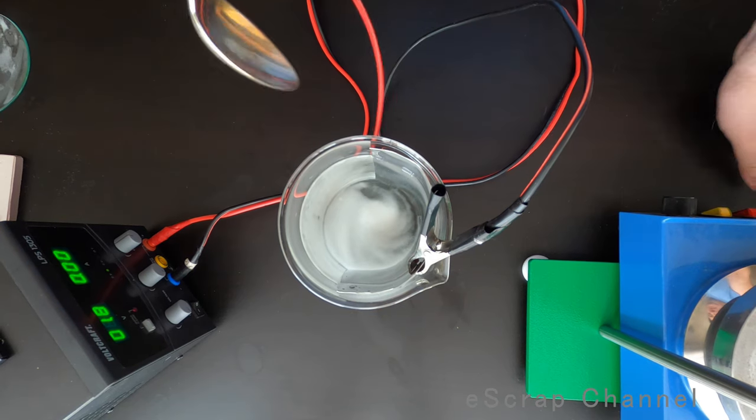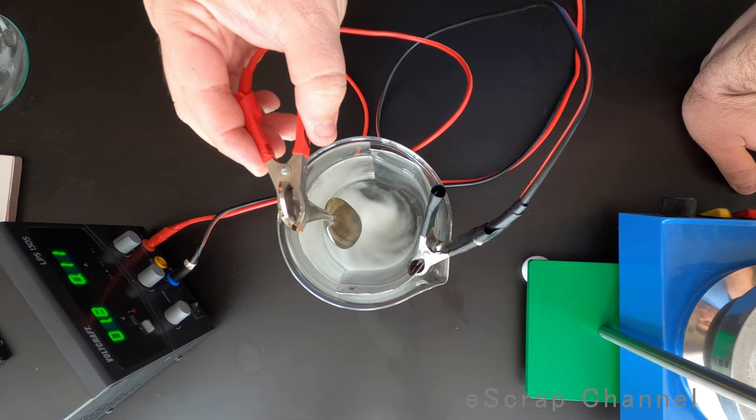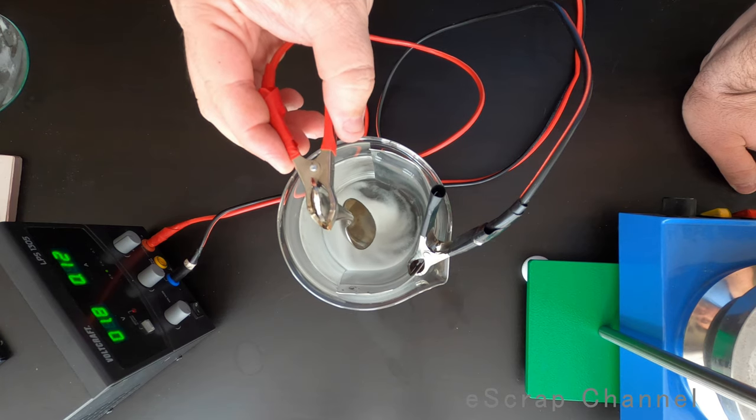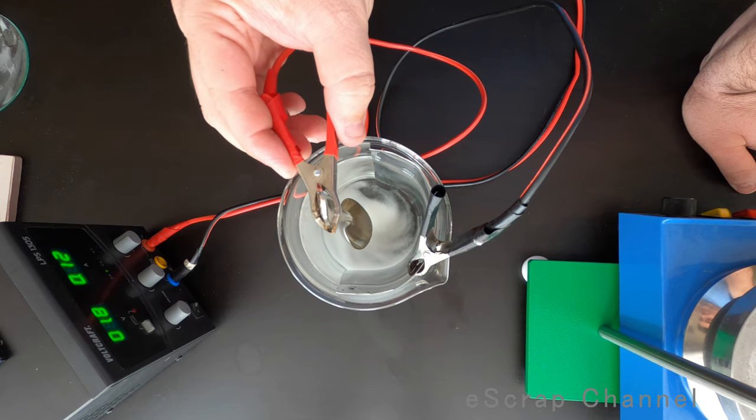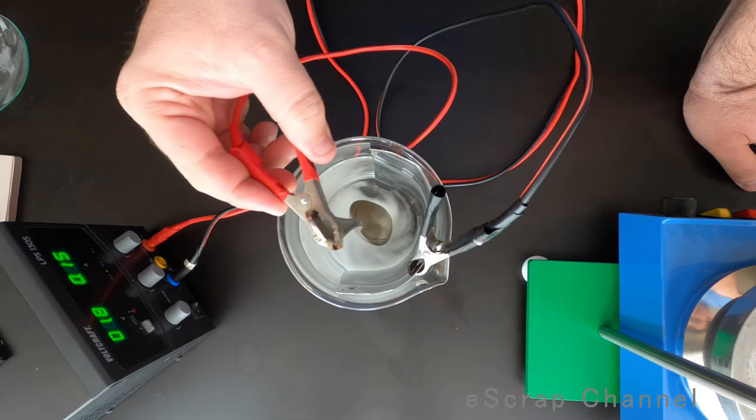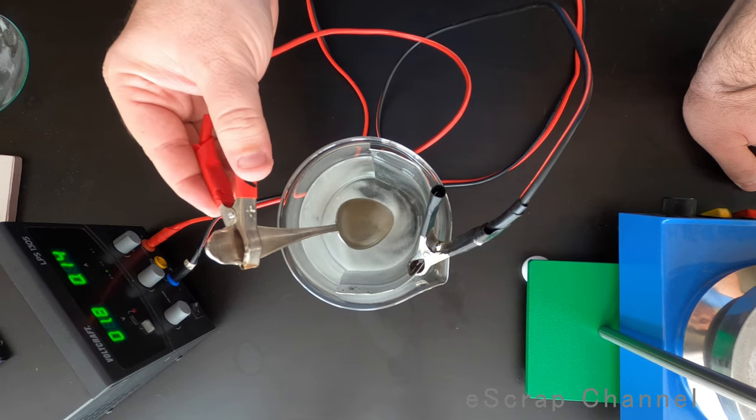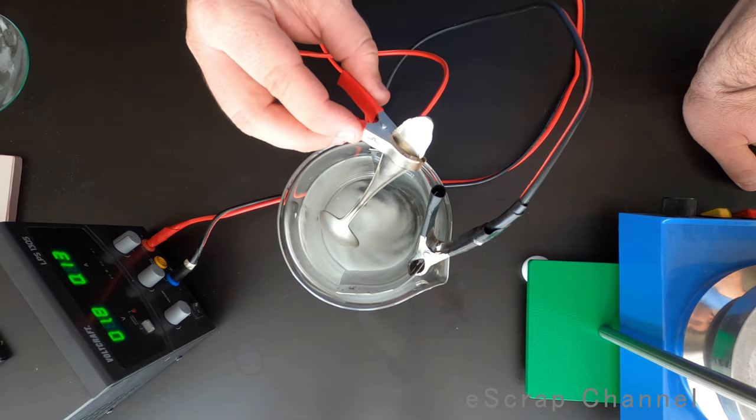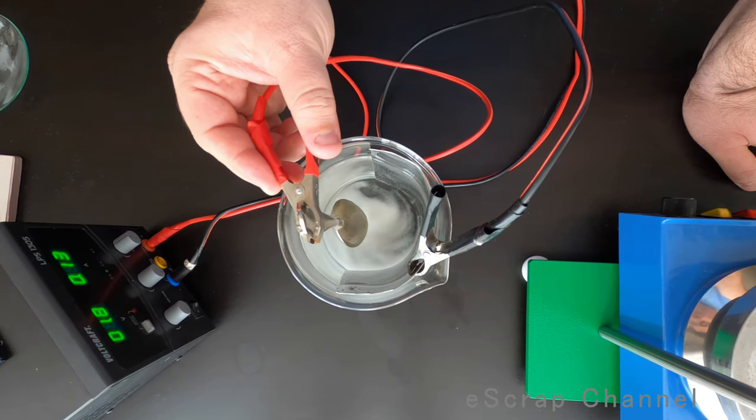And next step is to put inside our silver plated object. Immediately reaction starts and you maybe see that I have 0.13, 0.14 amps. So what is happening now? We have our silver going into the solution and we are removing the silver. We do the opposite of silver plating. That's why we call it silver reverse electroplating.